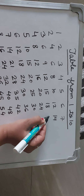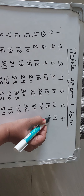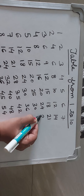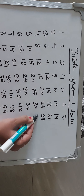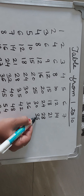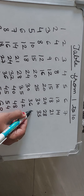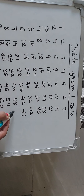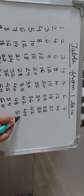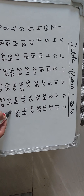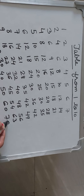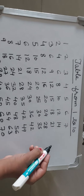Now table of 7. 7 1s are 7, 7 2s are 14, 7 3s are 21, 7 4s are 28, 7 5s are 35, 7 6s are 42, 7 7s are 49, 7 8s are 56, 7 9s are 63, 7 10s are 70.